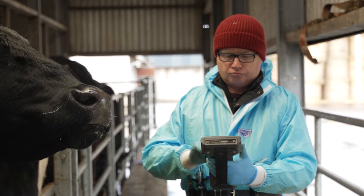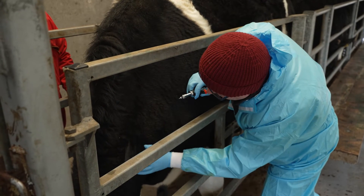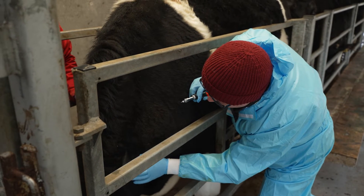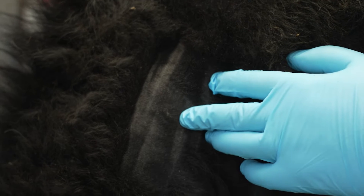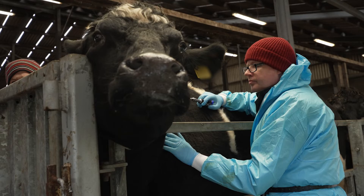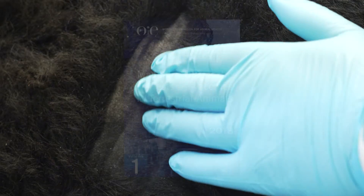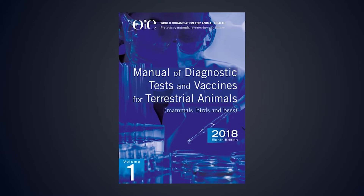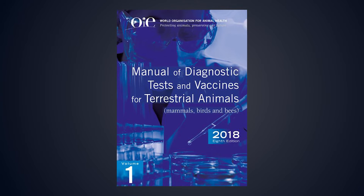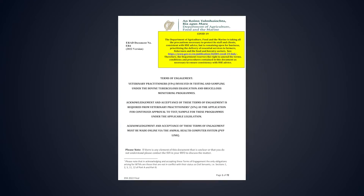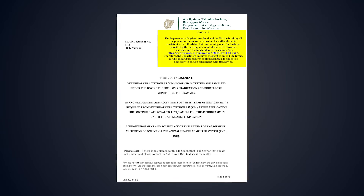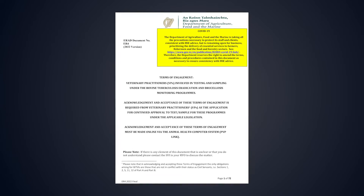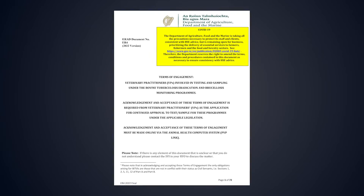This reliability is dependent upon proper intradermal injection of both tuberculins, accurate recording and reporting of clinical observations at the time of injection, and accurate characterization, measurement, and comparison of the reactions 72 hours later. The purpose of this video is to demonstrate the correct application of the single intradermal comparative tuberculin test in accordance with the OIE manual of diagnostic tests and vaccines for terrestrial animals and the requirements under the Irish bovine TB eradication program, as set out in the terms and conditions document, which each approved veterinary practitioner must comply with.